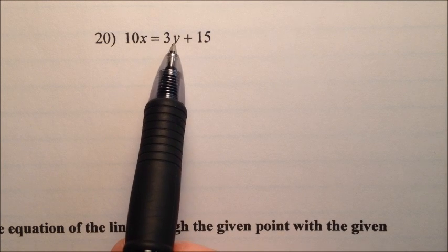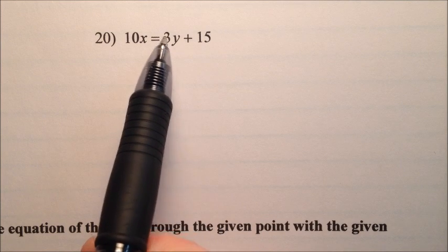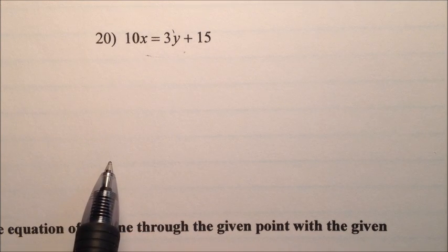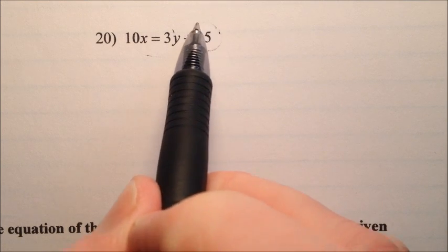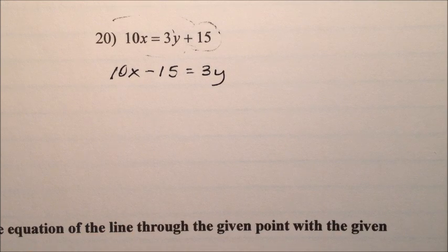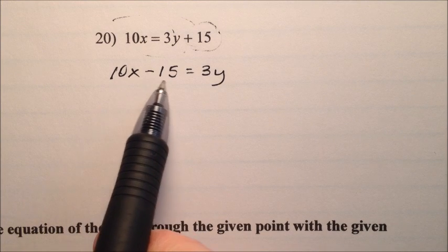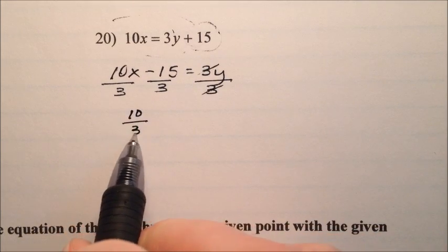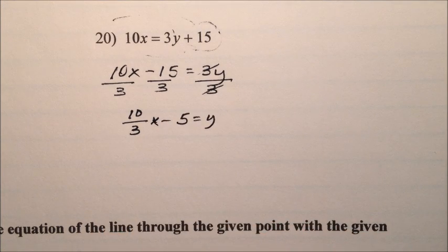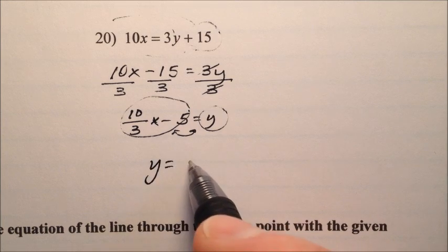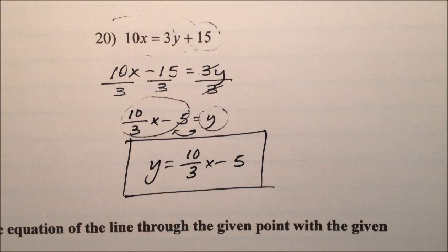In number 20, we're given 10x equals 3y plus 15. Let's put this positive 15 over to the left side, making it negative: 10x minus 15 equals 3y. We divide every term by 3, getting 10 thirds x minus 5 equals y. Using the symmetric property of equality, we can switch sides. So for number 20 in slope-intercept form, we have y equals 10 thirds x minus 5.